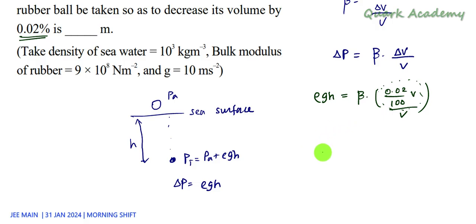H - we want H. So it's equal to beta over ρg. Here we can cancel out this V and V. We get 0.02 by 100.